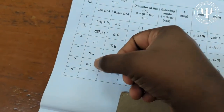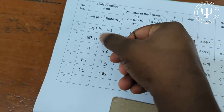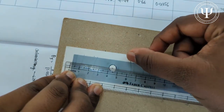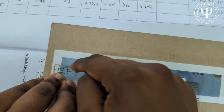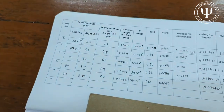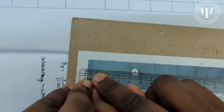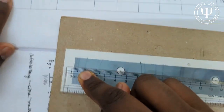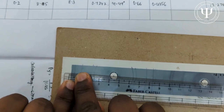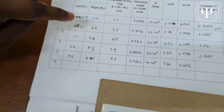You go from the fifth arc down to the first, then back from one to five. The first reading from the reference line is 0.2 centimeters for the fifth arc. The next length is 0.4 centimeters, and so on.